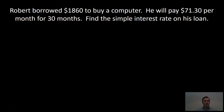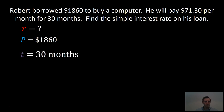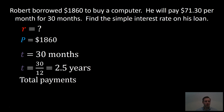Let's look at another example. Robert borrowed $1,860 to buy a computer. He'll pay $71.30 per month for 30 months. Find the simple interest rate on his loan. So this time we're looking for R, which is the interest rate. The principal is $1,860. The time is 30 months, which converted to years gives 2.5 years. We need to find the total payments, so we multiply $71.30 by 30, which is the total months he borrowed the money for, giving us total payments of $2,139.